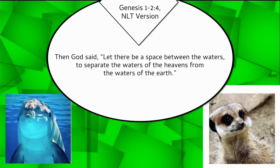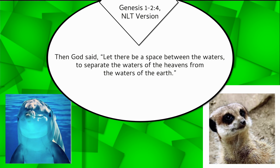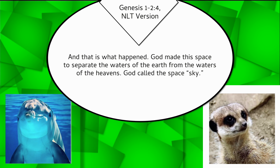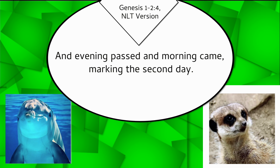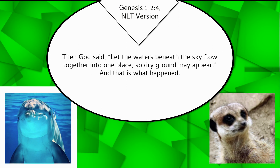Then God said, Let there be a space between the waters to separate the waters of the heavens from the waters of the earth. And that is what happened. God made this space to separate the waters of the earth from the waters of the heavens. God called the space sky. And evening passed, and morning came, marking the second day.